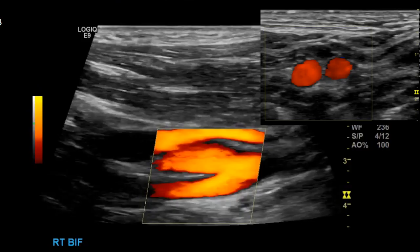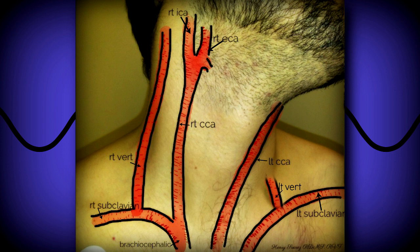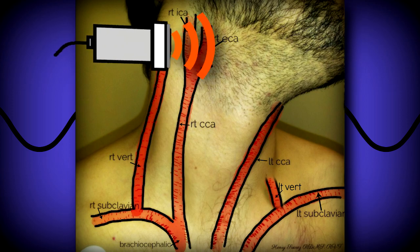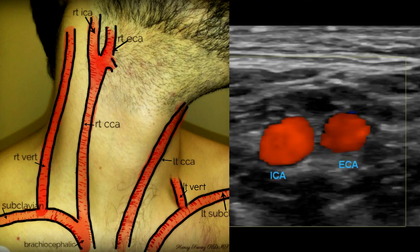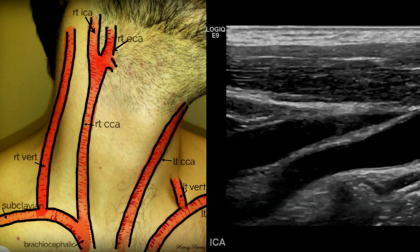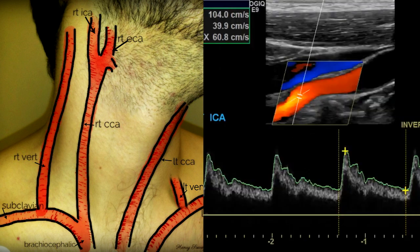After the bulb, take pictures of the bifurcation in transverse and sagittal. For the bifurcation, on some people it is very difficult to get a good image. Sometimes, if you angle your transducer all the way to the posterior part of the neck and then pivot and angle your beam towards the anterior part of the neck, you may be able to get the bifurcation that way. After the bifurcation, get the internal carotid artery in transverse and sagittal with color and spectral Doppler tracings. Be sure to document any plaque or pathology seen, and repeat these steps for the mid and distal internal carotid artery.